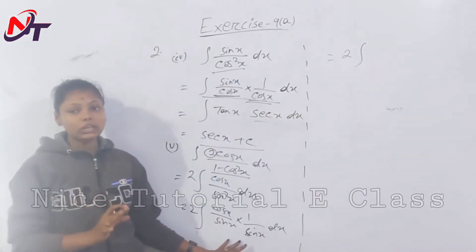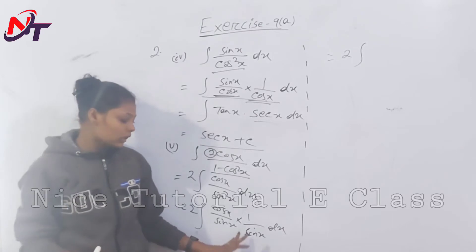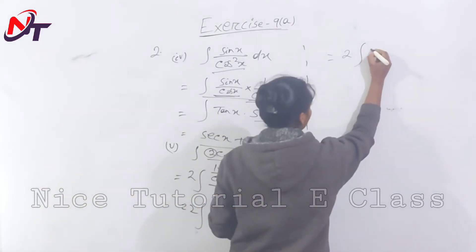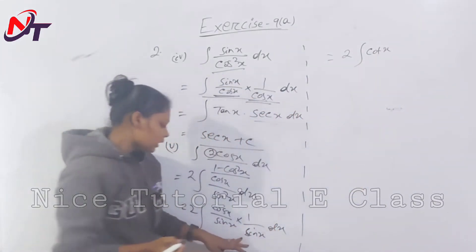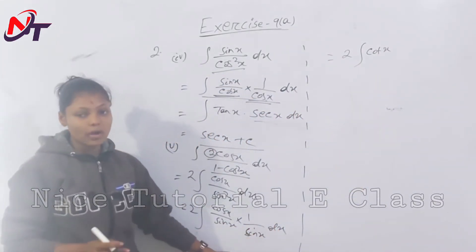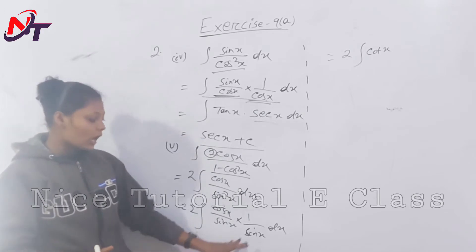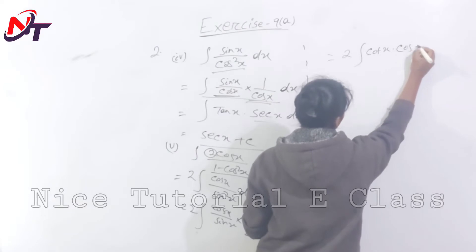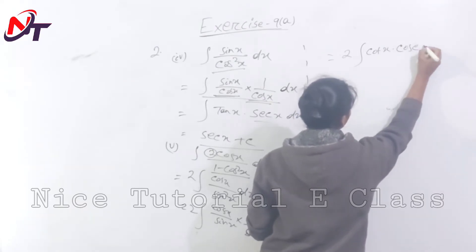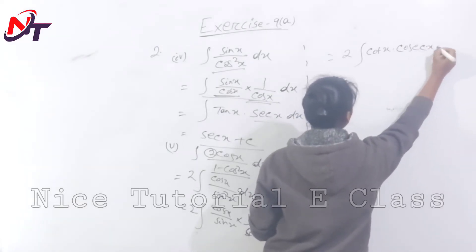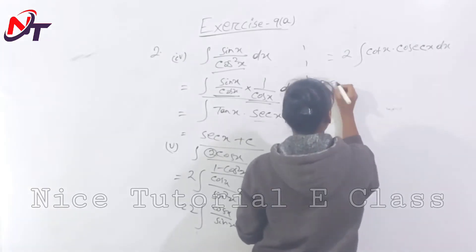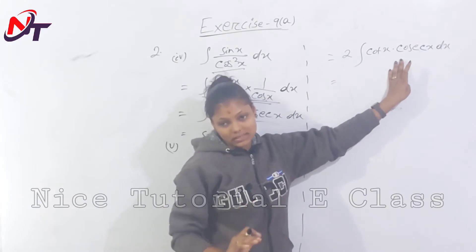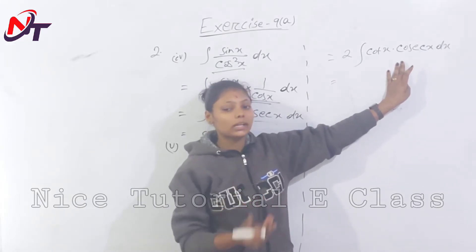That becomes 2 times integration of cos x by sin x into 1 by sin x dx, which is cot x into cosec x dx. With 2 as a constant outside the integration, we have integration of cot x into cosec x dx.